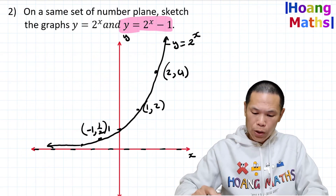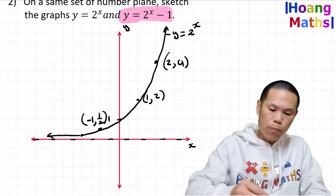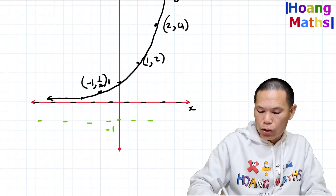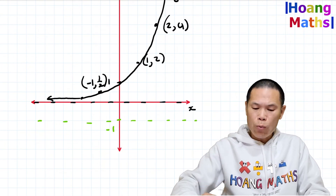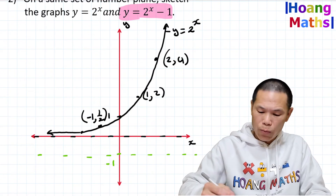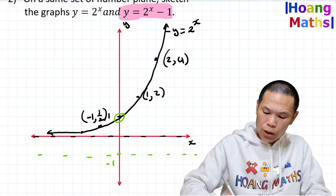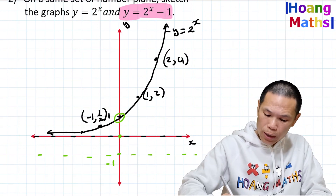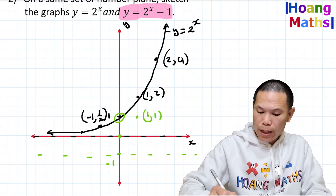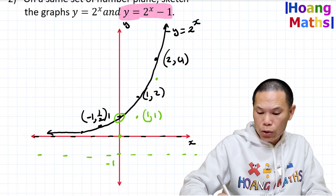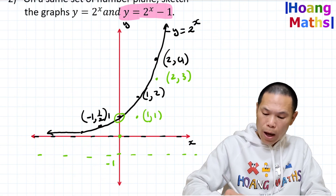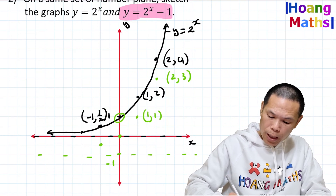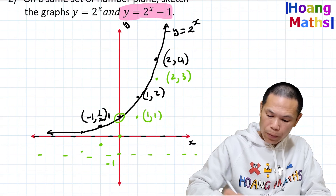Because the graph moved down one unit, the horizontal asymptote also moves down one unit to y = -1. The point (0, 1) becomes (0, 0); (1, 2) becomes (1, 1); (2, 4) becomes (2, 3); and (-1, 1/2) becomes (-1, -1/2).